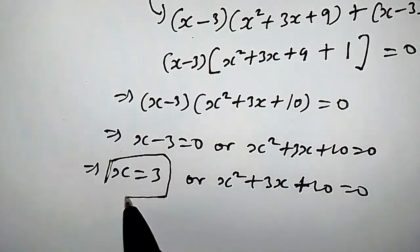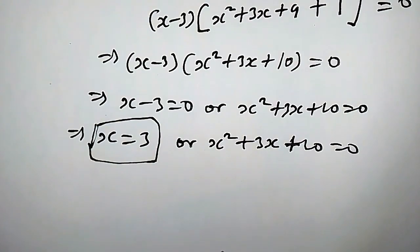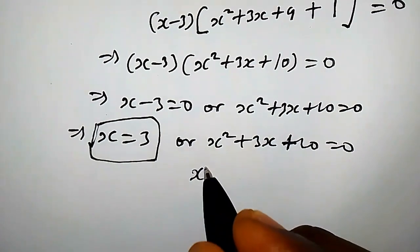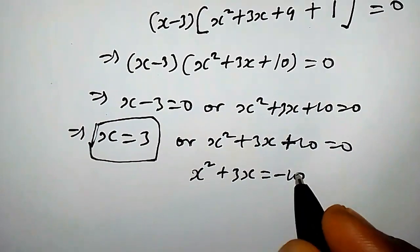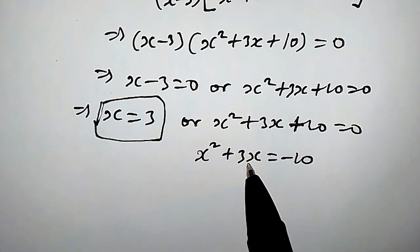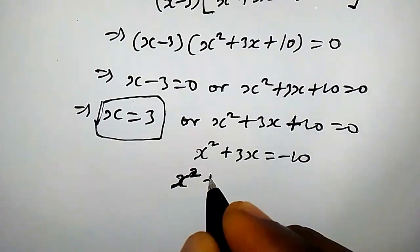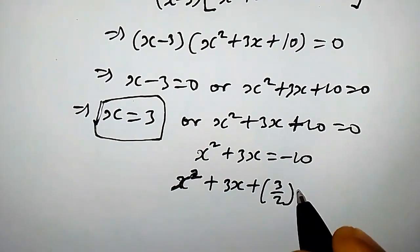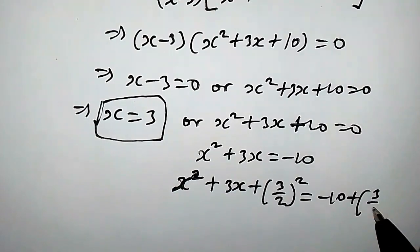Now let's consider the quadratic x squared plus 3x plus 10 equals 0. We observe that this quadratic equation is not factorizable, so we can either use completing the square or the quadratic formula. Let's use completing the square. We have x squared plus 3x, and we take 10 to the right hand side to get negative 10. Now we add half of the coefficient of x, which is 3 over 2, squared to both sides.